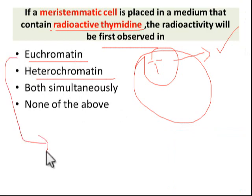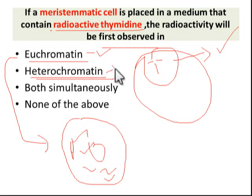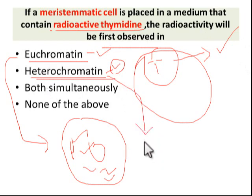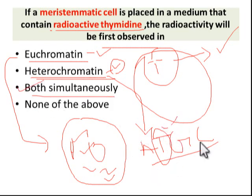Euchromatin is loosely coiled, while heterochromatin is tightly coiled DNA. The nucleotide bases are A, T, G, C — and T (thymine) is the radioactive thymine present in both euchromatin and heterochromatin. So the radioactivity is observed in both simultaneously. Therefore, the third option is the answer.